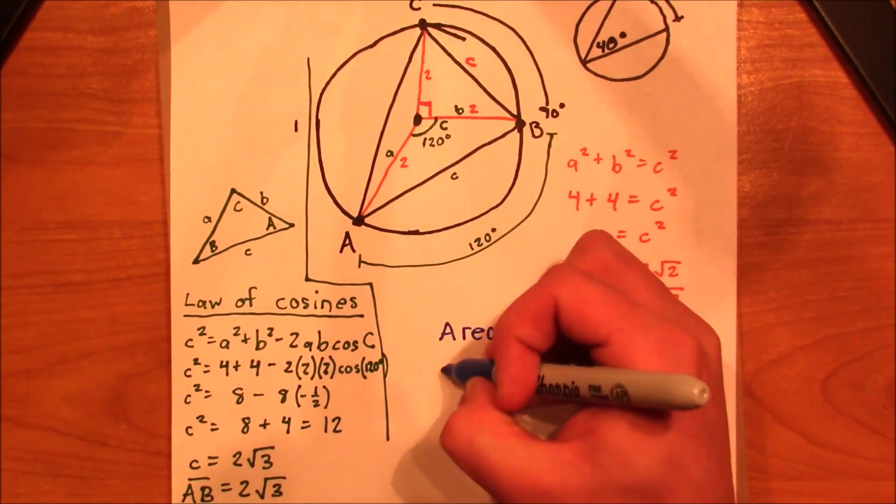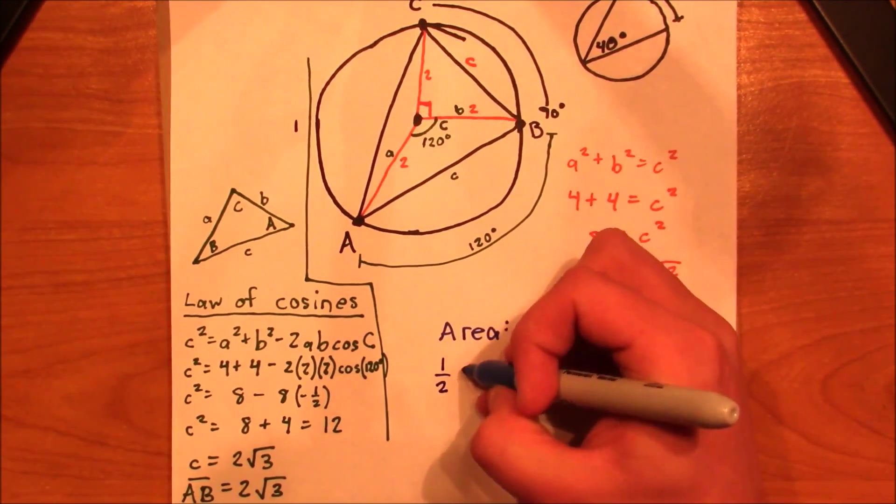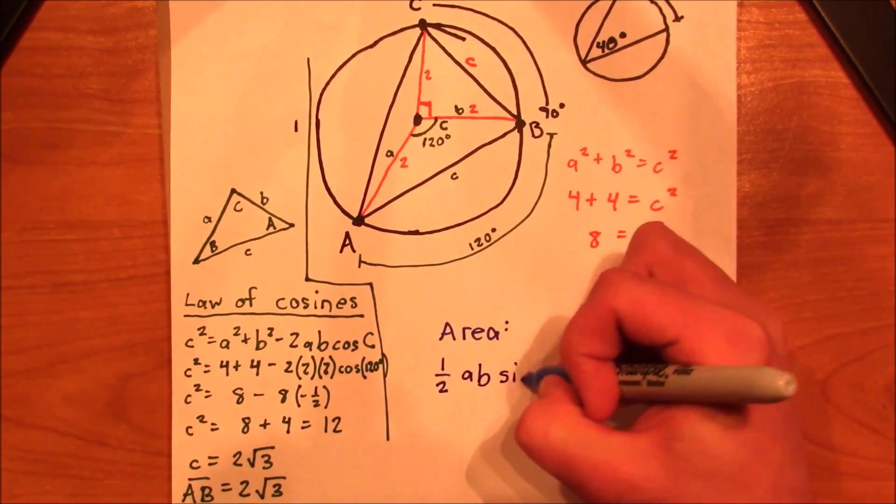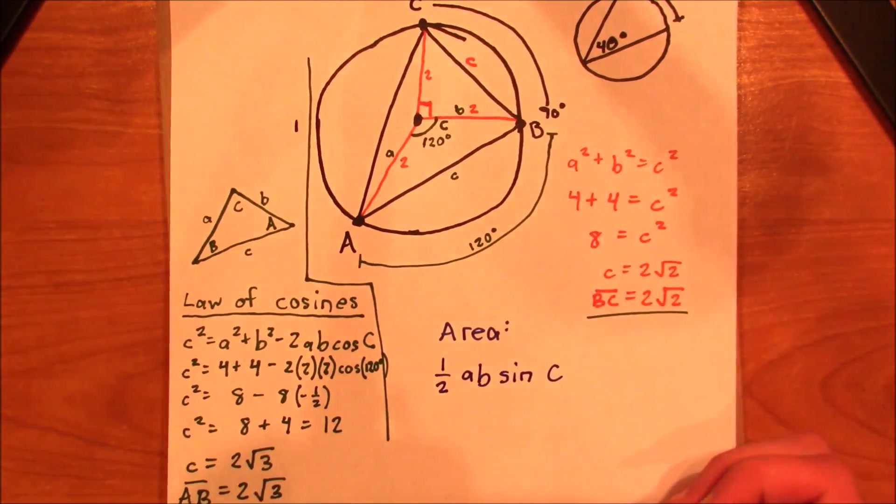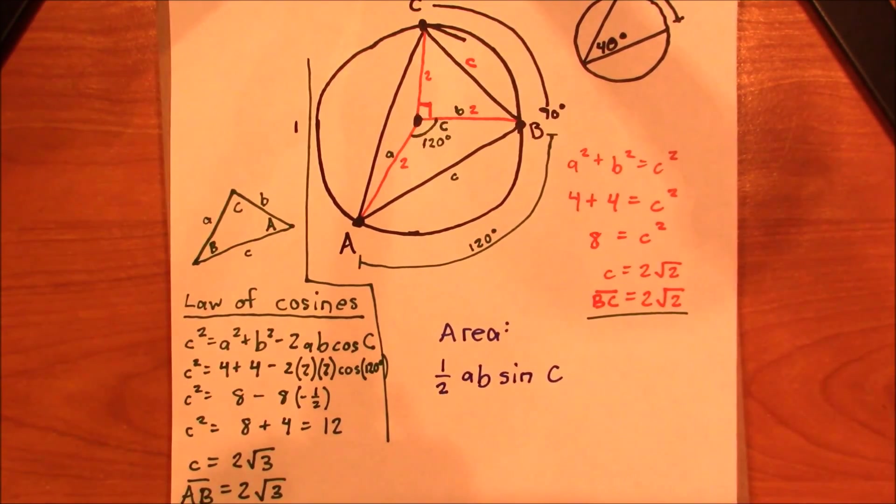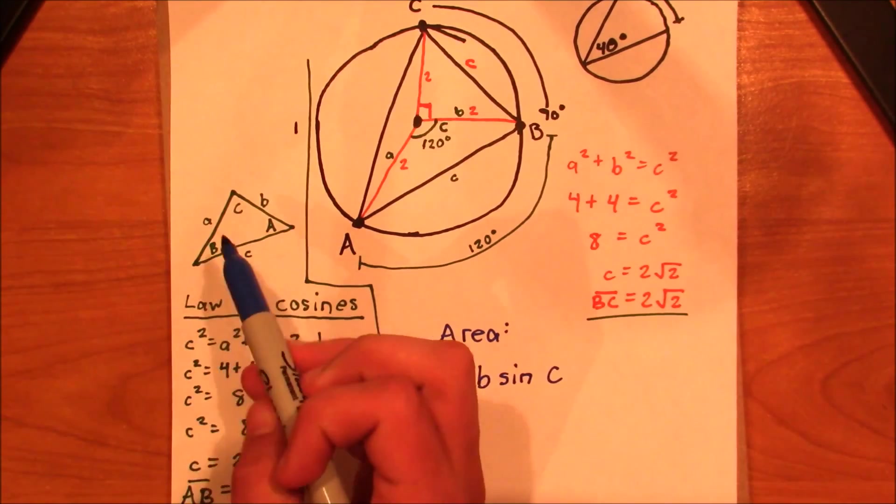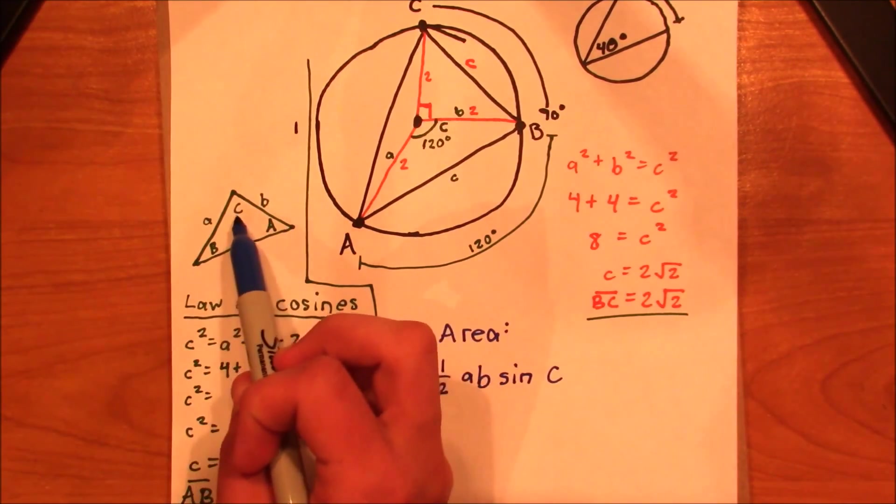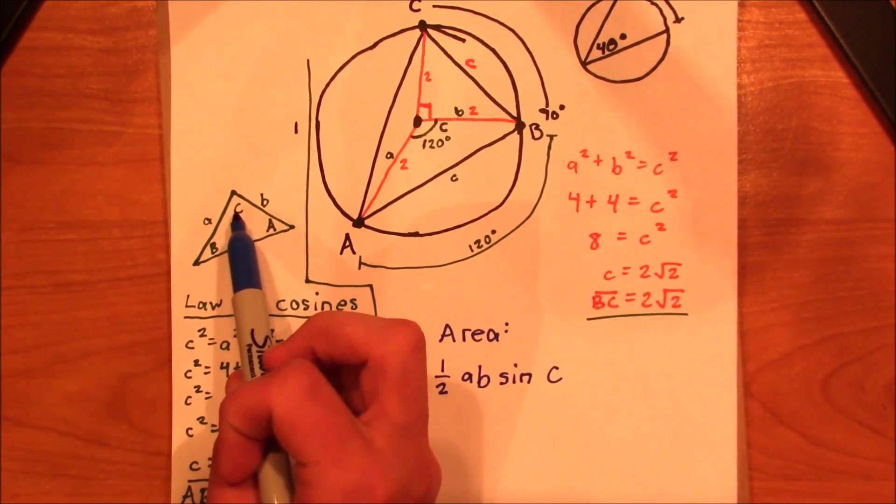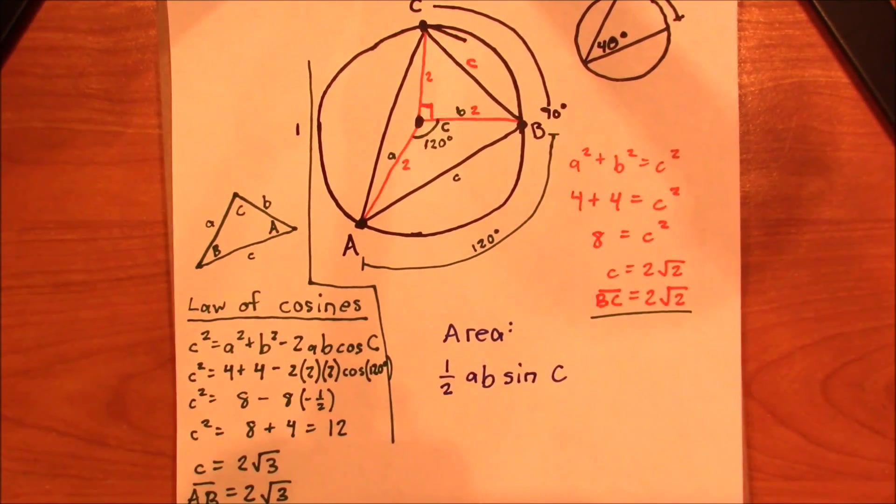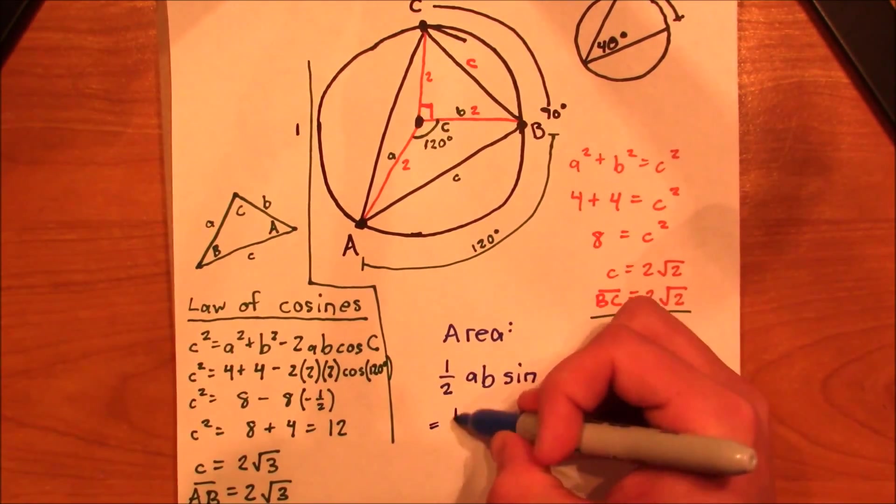So the equation for the area is 1 half ab sine c. So we can refer back to this triangle over here. If we have ab and we know the angle c that's between them, then we can calculate the area. So this is just going to be 1 half.